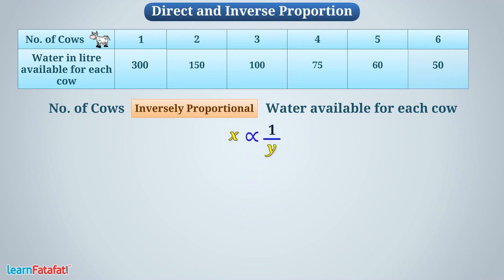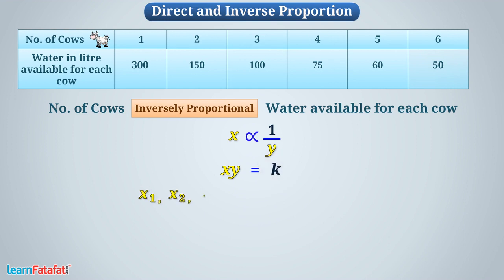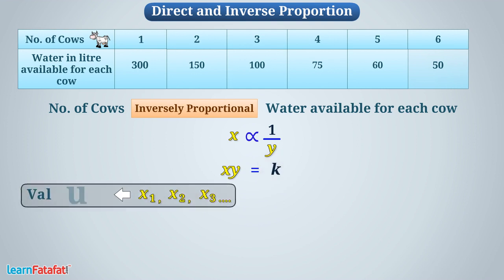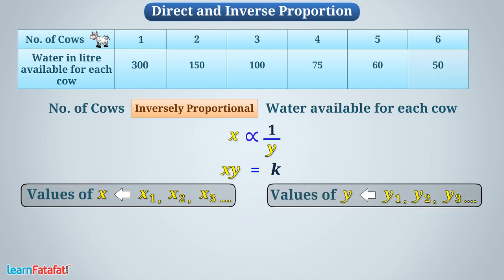In such case, there is always a constant number K such that XY is equal to K. If X1, X2, X3, etc. are values of X, and Y1, Y2, Y3, etc. are values of Y corresponding to values of X, then we can write X1·Y1 is equal to X2·Y2 is equal to X3·Y3, and so on, which is equal to K.